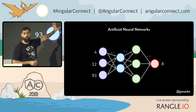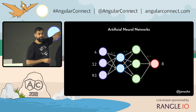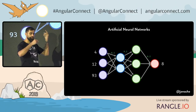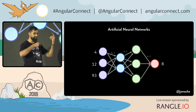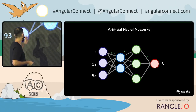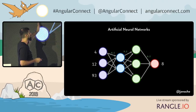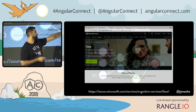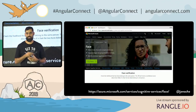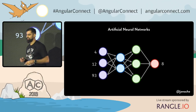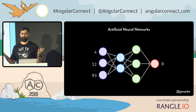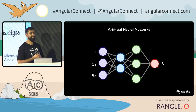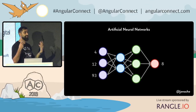That's all a neural network is — just weights that are getting tuned and changed. So when you pump in some numbers at the start, you get the number you expect at the end.